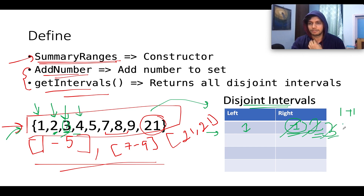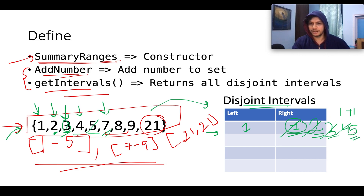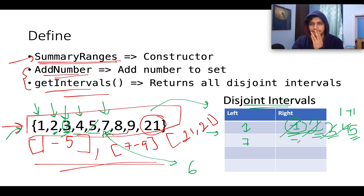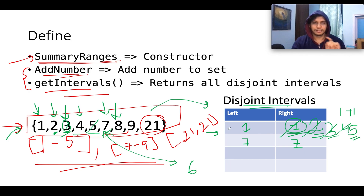Similarly, 4: 3 + 1 = 4, happy case, replace with 4. Then 5: 4 + 1 = 5, happy case, replace with 5. Now the interesting case — we see 7. The last interval is [1,5]; the rightmost entry is 5. 5 + 1 = 6, but 6 ≠ 7, so it's a mismatch. In such cases we create a new interval: [7,7]. Next is 8: last added interval is [7,7], 7 + 1 = 8, happy case, so we update to [7,8].